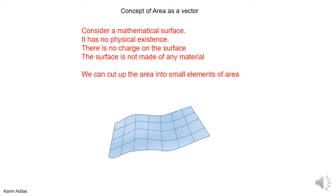In Gauss's law, we saw a new concept, which is that area is a vector. We want to discuss this in detail and see what it means.